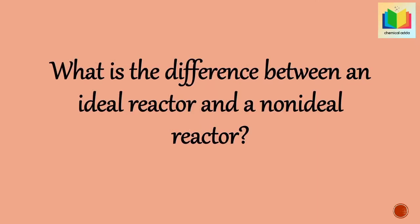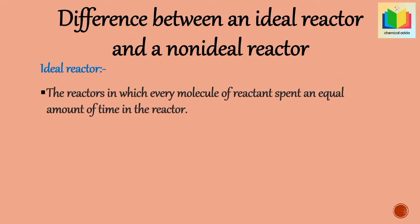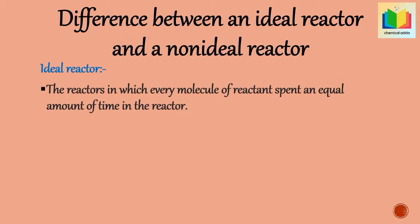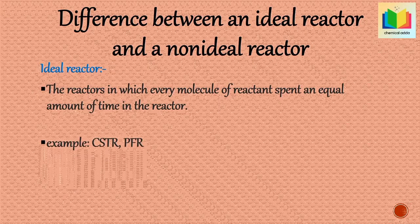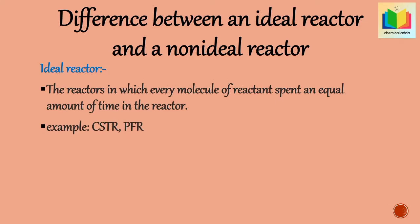What is the difference between an ideal reactor and a non-ideal reactor? Ideal reactors are those reactors in which every molecule of reactant spends an equal amount of time or space time in the reactor. Ideal reactors are perfectly mixed reactors — it may be a batch reactor, plug flow reactor, packed bed reactor, or perfectly mixed continuous reactor. Because of proper mixing, every molecule spends an equal amount of time. Examples of ideal reactors are CSTR and PFR.